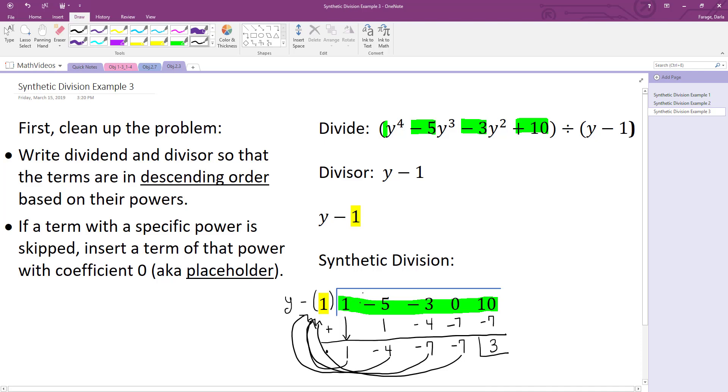And it was y to the 4th minus 5y to the 3rd minus 3y squared plus 0y plus 10. And so when we do that division, we take a y minus 1 and divide it into that y to the 4th polynomial. We're going to get a degree 3 polynomial, so one degree less than our dividend.